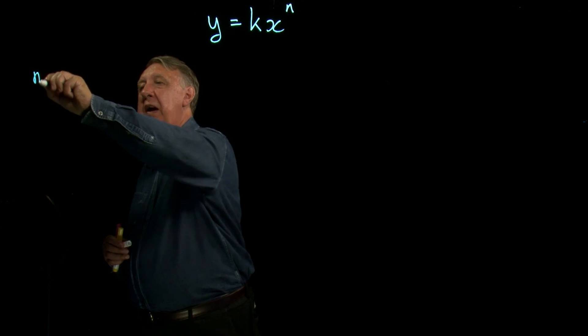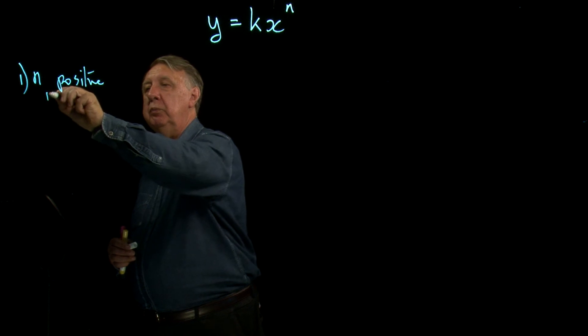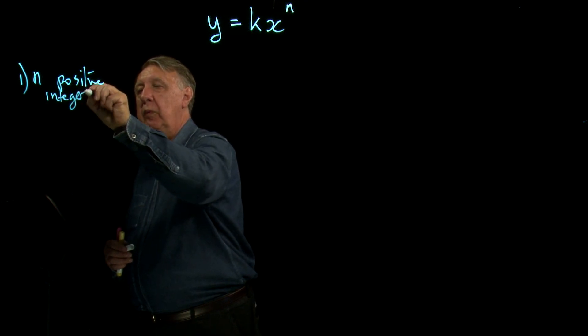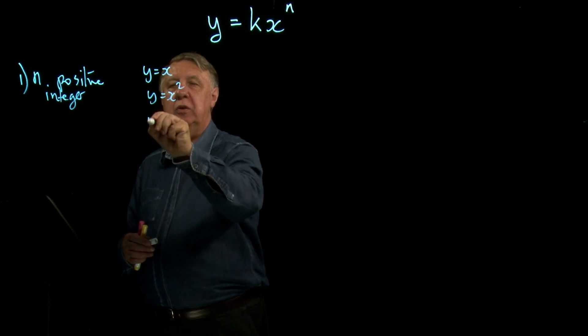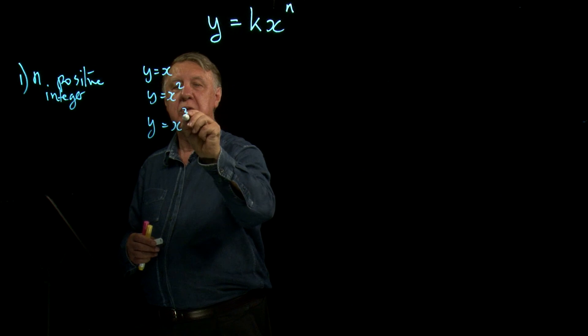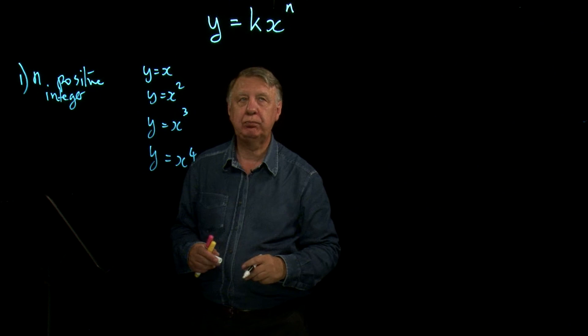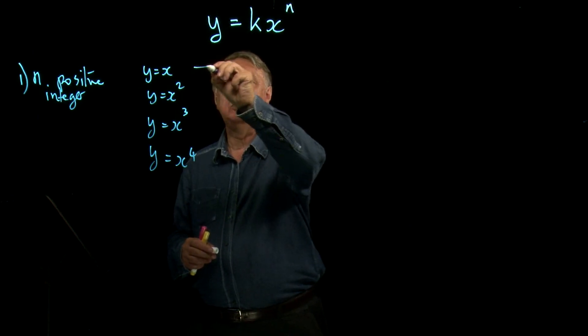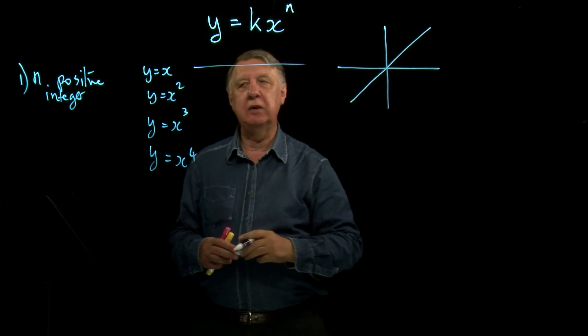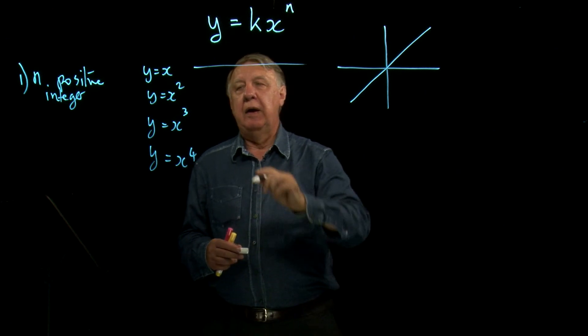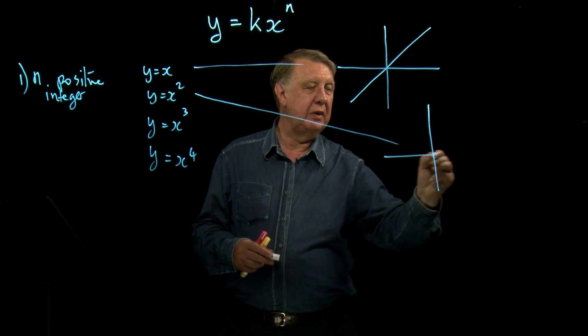The first one is if n is a positive integer. In other words y equals x, y equals x squared, y equals x cubed, y equals x to the fourth and so on. Well we all know what y equals x looks like. It's a straight line. Hopefully by now you all know what y equals x squared looks like because I've certainly used it a number of times. It looks like that.